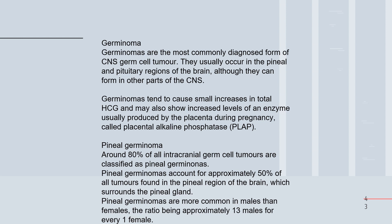CNS germ cell tumors usually occur in the pineal and pituitary regions. Therefore, any CT or MRI findings showing a lesion in the pineal or pituitary region should raise suspicion mainly for germ cell tumors, specifically germinoma.